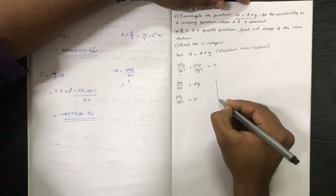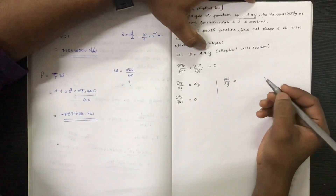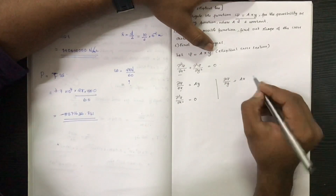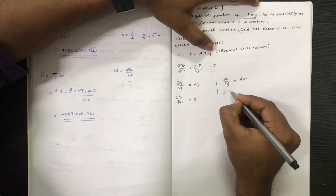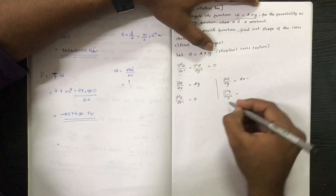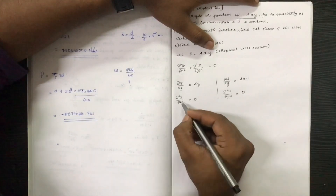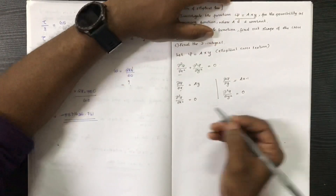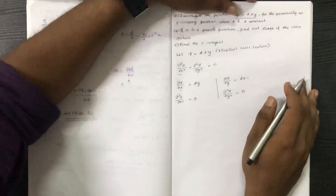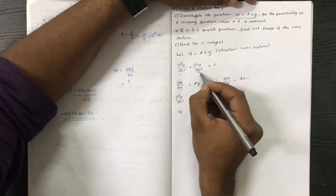Now we compute ∂ψ/∂y. Differentiating ψ = axy with respect to y: a and x are constants, so the derivative of y is 1, giving ∂ψ/∂y = ax. Then ∂²ψ/∂y² = 0, since ax is constant with respect to y.